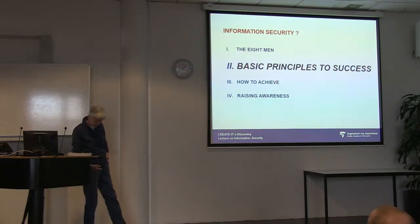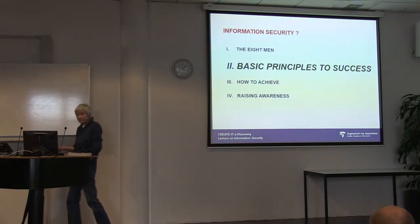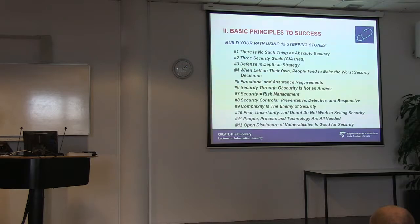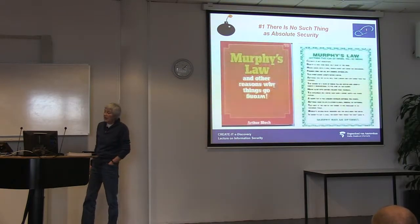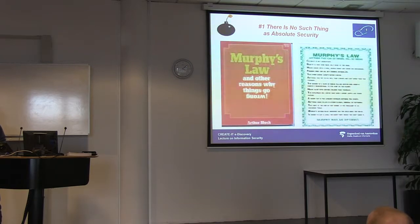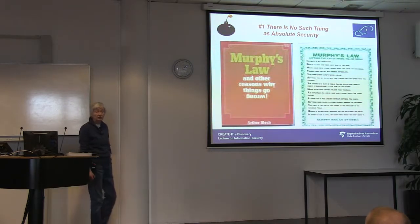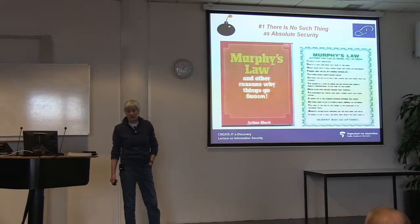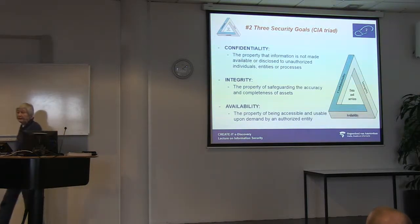Basic principles — how do we achieve it? These are the 12 stepping stones you need. First: absolute security — 100% security does not exist. Even 99.999% does not exist. Absolute security is fake. You know Murphy's law: if something can go wrong, it will go wrong. You only don't know when Murphy hits, but it will.